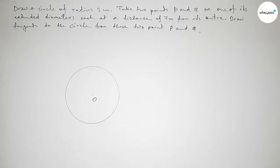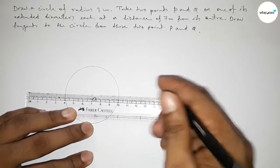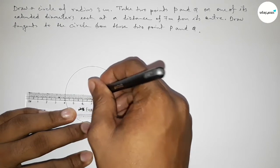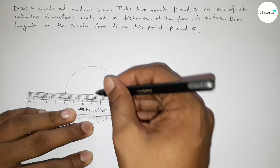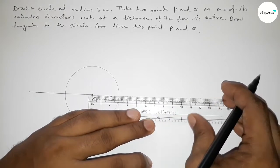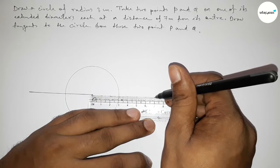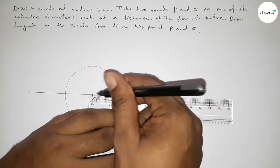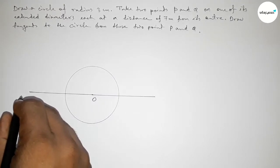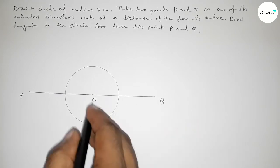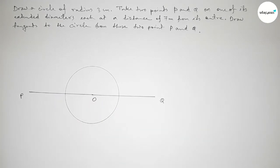This is center O. Now we have to take 7 centimeters from center O. So extending the diameter on this side and also extending the diameter on the other side — same distance, 7 centimeters. Taking point P here and point Q here, so this is 7 and 7 centimeters.